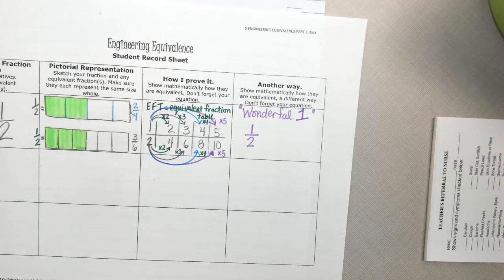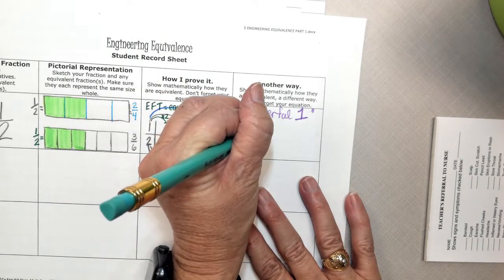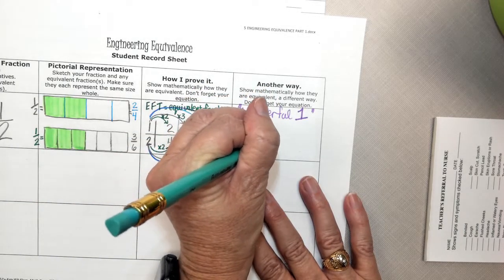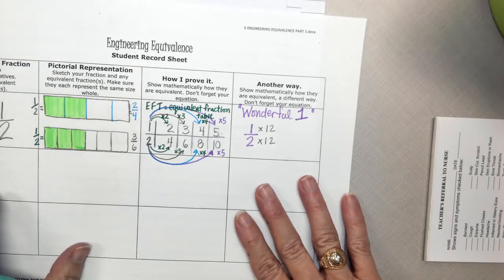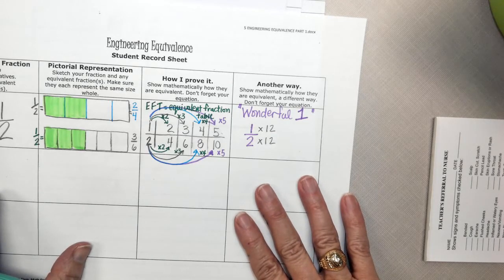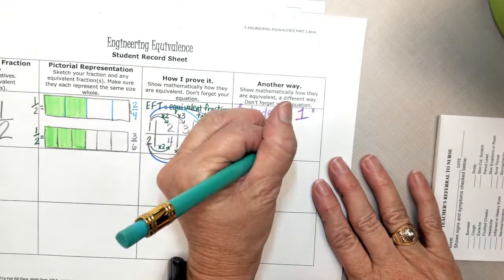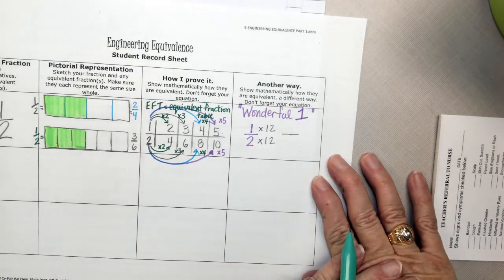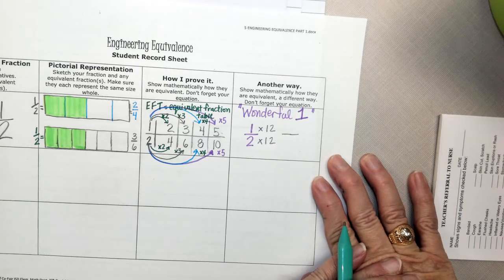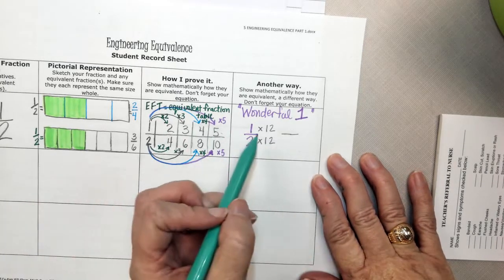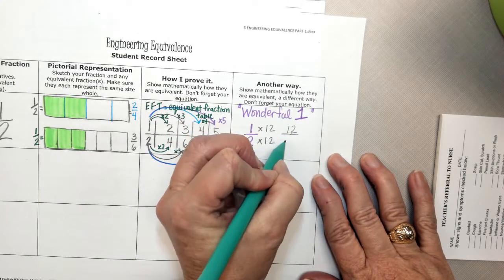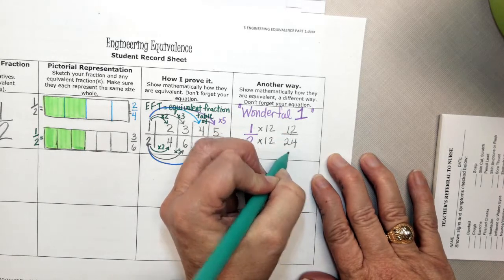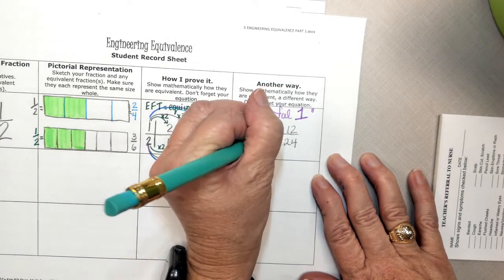Give me a number, and we're going to find an equivalent for 1 half. Lyric, what's your number? 12. If we know a number like 12, we can multiply the top and the bottom by 12, and we get a new fraction name. What is that new fraction name going to be, Joseph? 12 and 24. 12, 24. Is 12 half of 24? Yeah. It is equivalent.